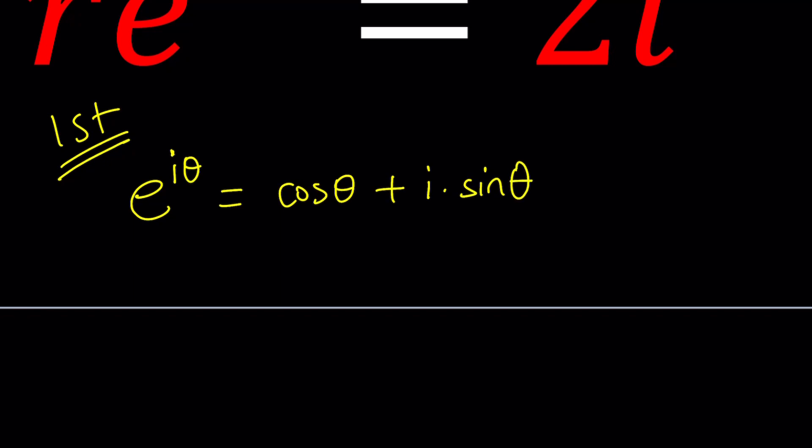Obviously in this case, theta doesn't have to be real, it can also be complex. Now, if you multiply by r, you're going to get r e to the i theta, which gives you r times cosine theta plus i sine theta, which is basically a complex number written in polar form. And we are given that this is equal to 2i.